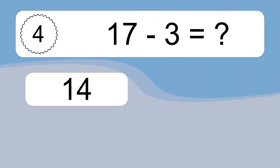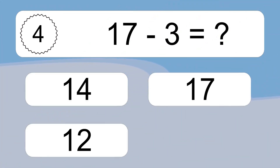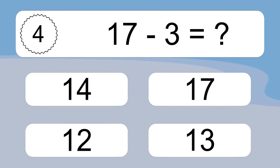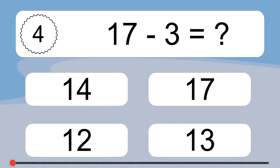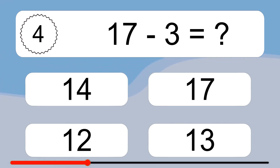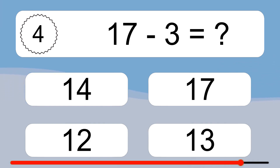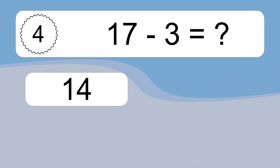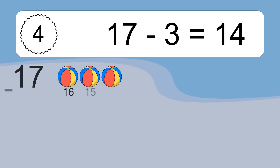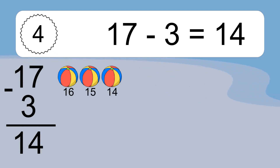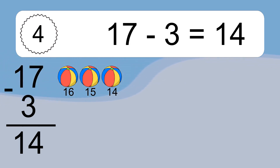17 minus 3 equals what? 17 minus 3 equals 14. Let's count it! 16, 15, 14.